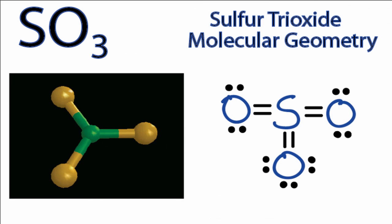This is called trigonal planar. There's a plane, a flat plane, and they're spread out as far away as they can. This isn't the correct colors for SO3, but it is the correct molecular geometry.